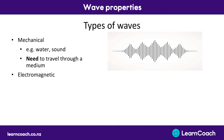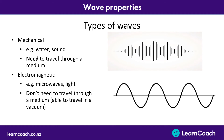The other type of wave is electromagnetic waves. Light is a type of electromagnetic wave. Microwaves and radio waves are also types of electromagnetic waves. Unlike mechanical waves, electromagnetic waves don't have to have a medium to travel — they are able to travel through a vacuum. This is why we can see the light from the sun, because it's able to travel through the vacuum of space to reach the earth.